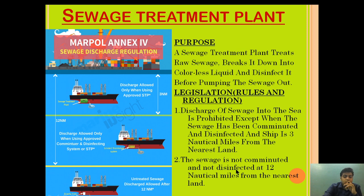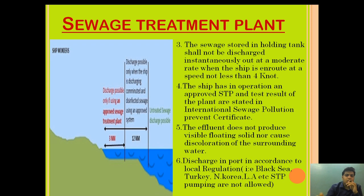If the sewage is not comminuted and not disinfected, we need to discharge it at 12 nautical miles away from the land. If we don't have a sewage treatment plant and only have a holding tank, sewage disposal is also allowed, but at 12 nautical miles away from land, at a moderate rate, when the sewage is not comminuted and not disinfected.